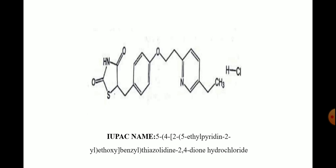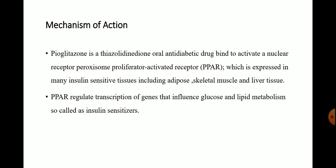This is the structure of pioglitazone hydrochloride. The mechanism of action: pioglitazone is a thiazolidinedione oral anti-diabetic drug that binds to and activates a nuclear receptor, peroxisome proliferator activated receptor, which is expressed in many insulin-sensitive tissues including adipose, skeletal muscle, and liver tissue. The peroxisome proliferator activated receptor regulates transcription of genes that influence glucose and lipid metabolism.